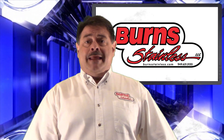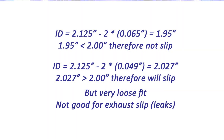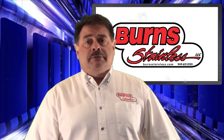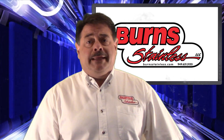How about a 2 and 1/8 inch 18 gauge tube? Again, the inside diameter is given by this equation, which is 2.027 inches. 2.027 is greater than 2 inches, so yes, it will slip over, but it will be a very loose fit and would not work well as a slip fit in an exhaust — that is, a very leaky joint.